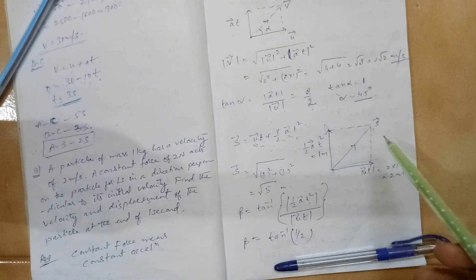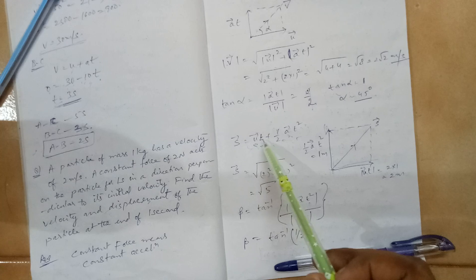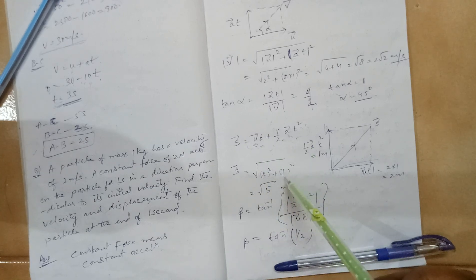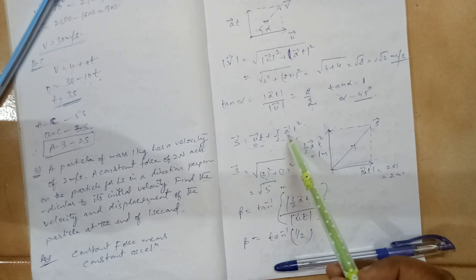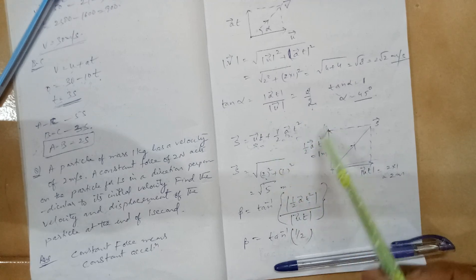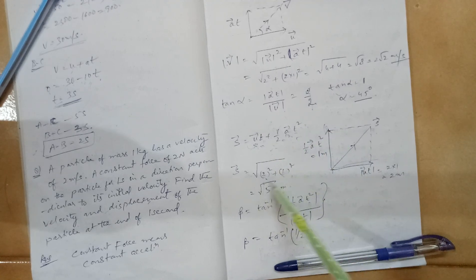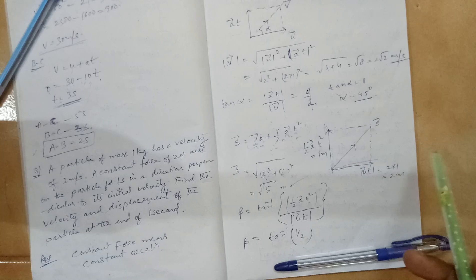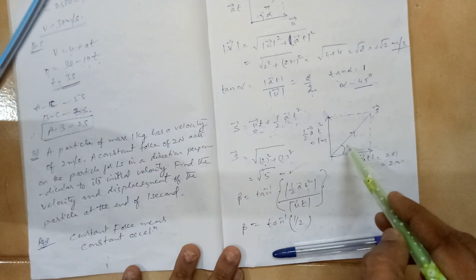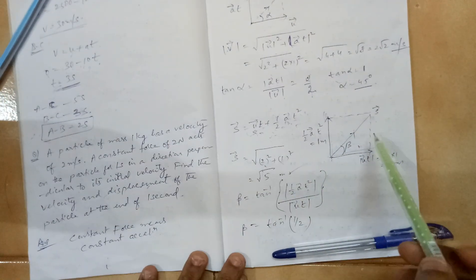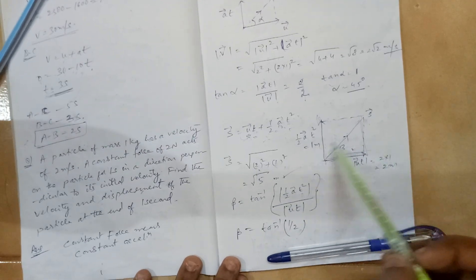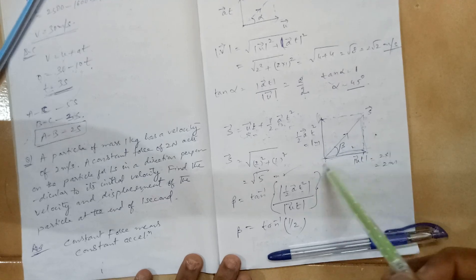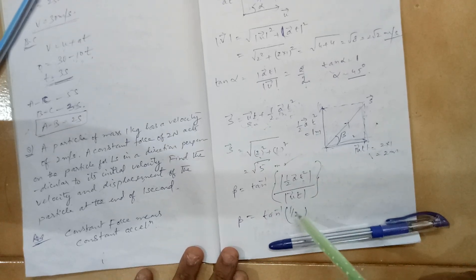The magnitude of the displacement vector is root over (ut)² plus (½at²)². Plugging in values: u = 2, t = 1, a = 2. So ut = 2 × 1 = 2, and ½at² = ½ × 2 × 1² = 1. Therefore, magnitude = √(4 + 1) = √5 meters. For direction, tan β = opposite over adjacent = 1 over 2, so β = tan⁻¹(1/2).